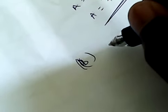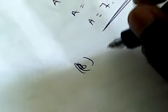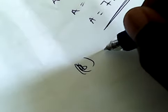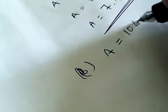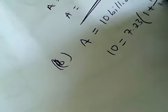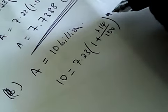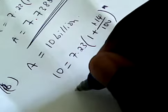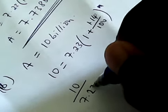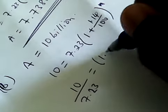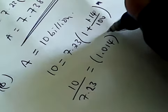Then for B, the question says find the year when the population is expected to reach 10 billion. So when the population will be 10 billion. So it means what you are saying is 10 is equal to 7.23 times 1 plus 1.14 over 100 to the power of N. So you will be looking for N. So we can say then 10 over 7.23 is equal to 1.014 to the power of N.